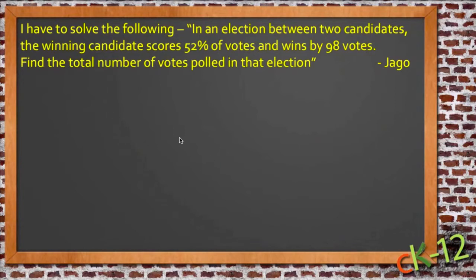Let's take a look at this question Iago sent in. I have to solve the following: In an election between two candidates, the winning candidate scores 52% of the votes and wins by 98 votes. Find the total number of votes polled in that election.